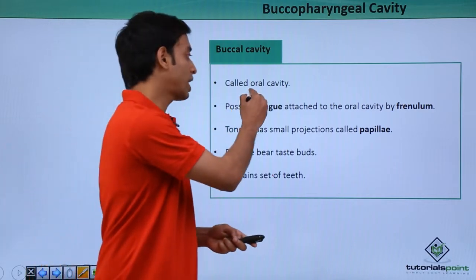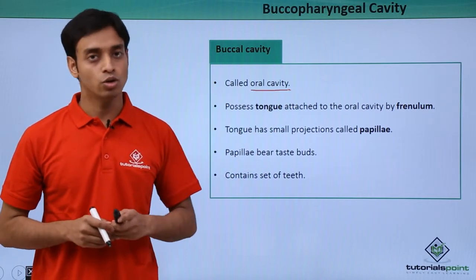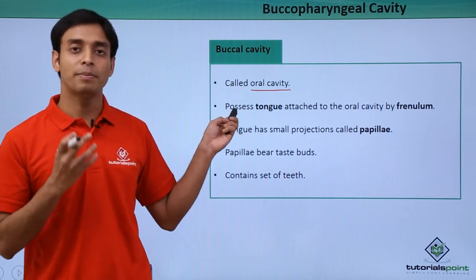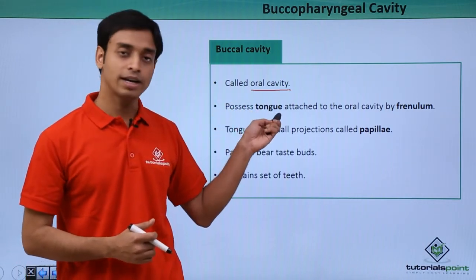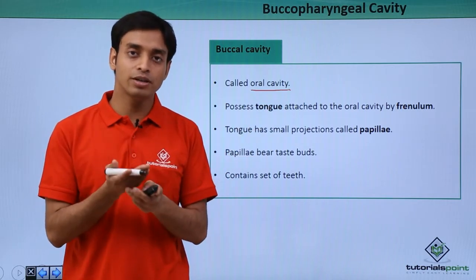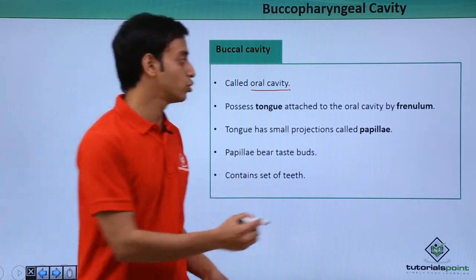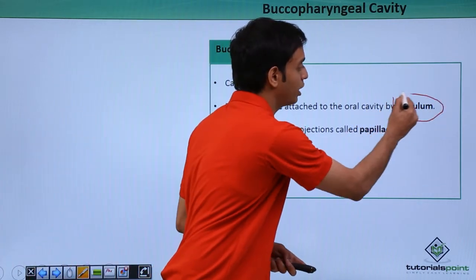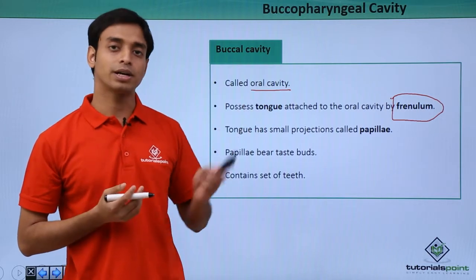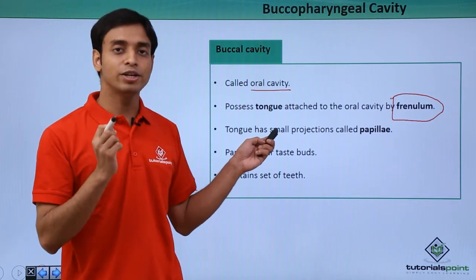After the vestibule, the next part is known as the buccal cavity, also known as the oral cavity — basically the mouth portion. This oral cavity has a muscular structure known as the tongue, which is attached to the floor of the buccal cavity by a structure known as the frenulum.